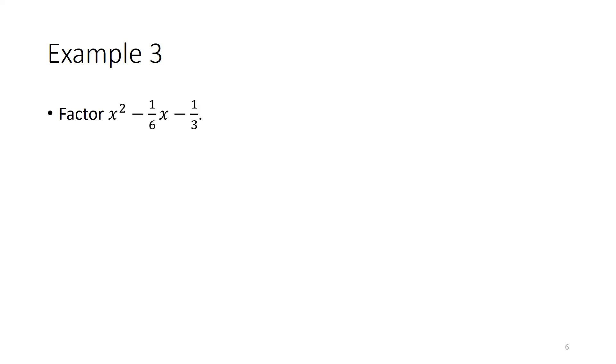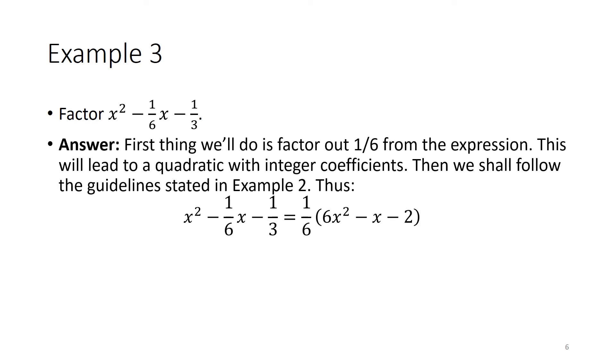Our third example asks us to factor x squared minus 1 sixth x minus 1 third. First thing we'll do is factor out 1 sixth from the expression. This will lead to a quadratic with integer coefficients. Then we shall follow the guidelines stated in example 2.